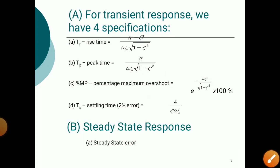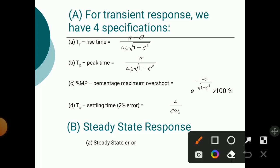For transient response there are four specifications. Rise time: Tr = (π − θ) / (ωn√(1 − ζ²)). Peak time: Tp = π / ωd. Percentage maximum overshoot: %Mp = e^(−πζ/√(1−ζ²)) × 100%. Settling time: Ts = 4 / (ζωn). For steady state response, we get the steady state error directly.